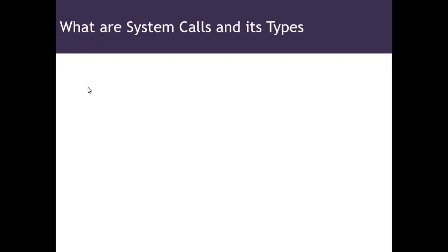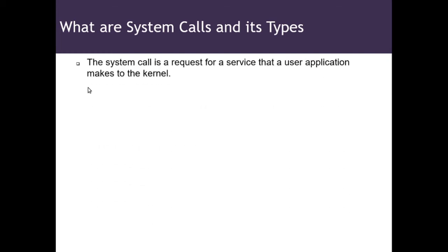Next we'll discuss system calls and the different types. System calls are important because when we implement the client and server code for a TCP connection, we will be using some APIs called system calls. We need to understand the difference between a system call and generic APIs. A system call is a request for a service that a user application makes to the kernel.